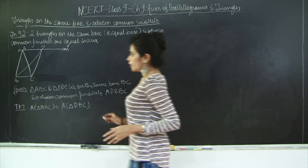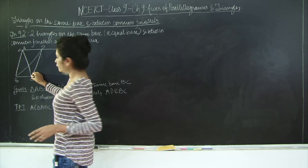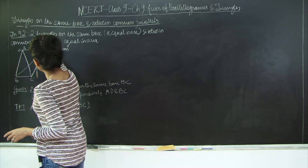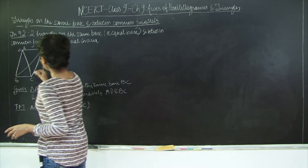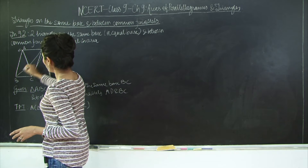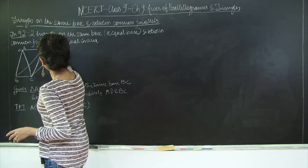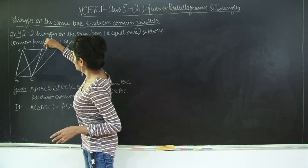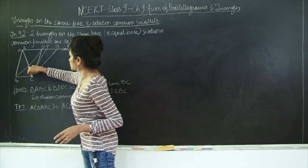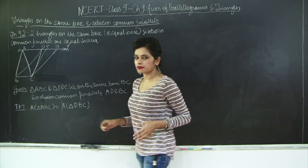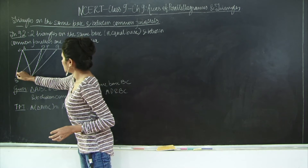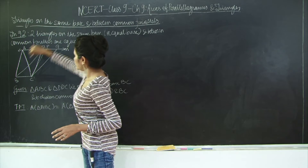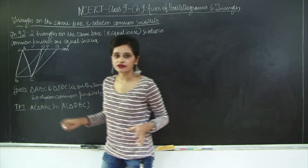To do that, I will draw a line from C parallel to AB — let's call it CP — and I will draw another line from C parallel to BD — and I will call this CQ. So now you have parallelograms APCB and DQCB, because CP is parallel to AB, CQ is parallel to BD, AP is parallel to BC, and DQ is parallel to BC. Therefore you have two quadrilaterals.